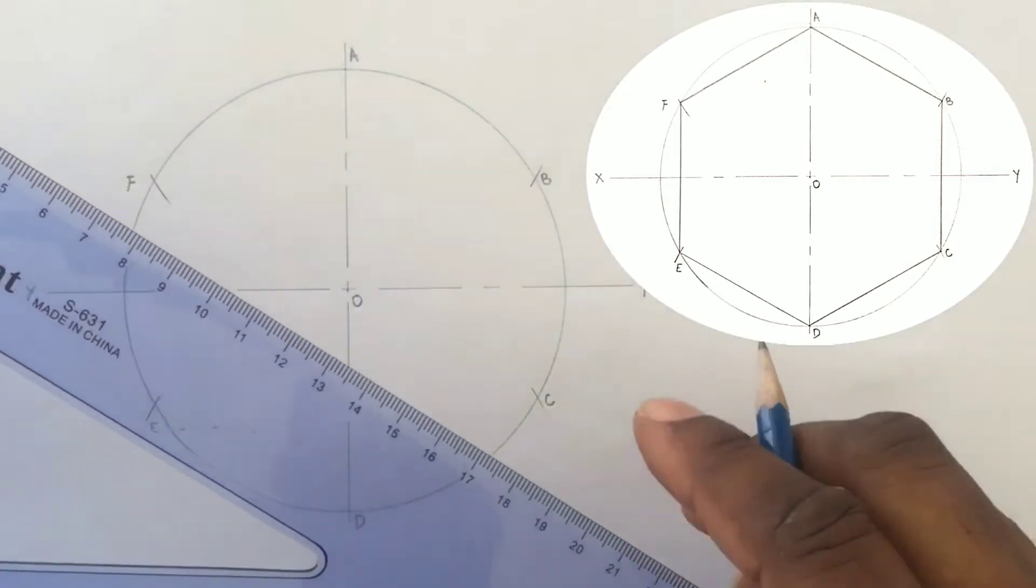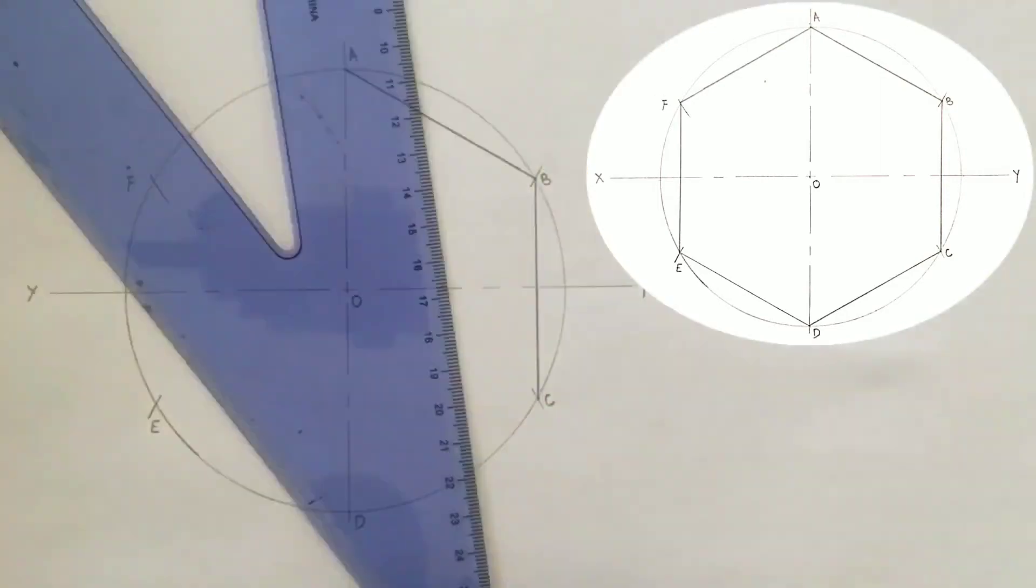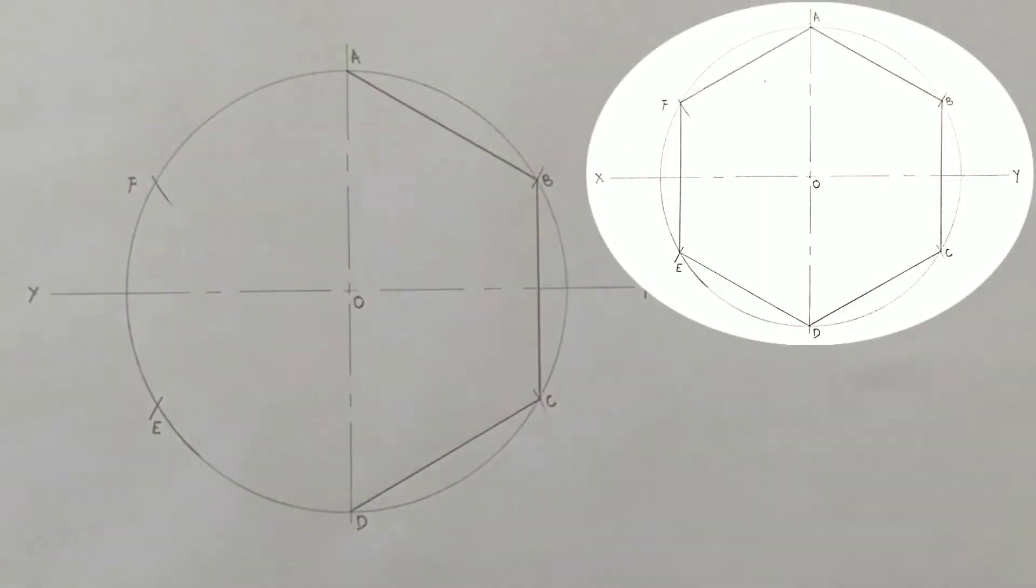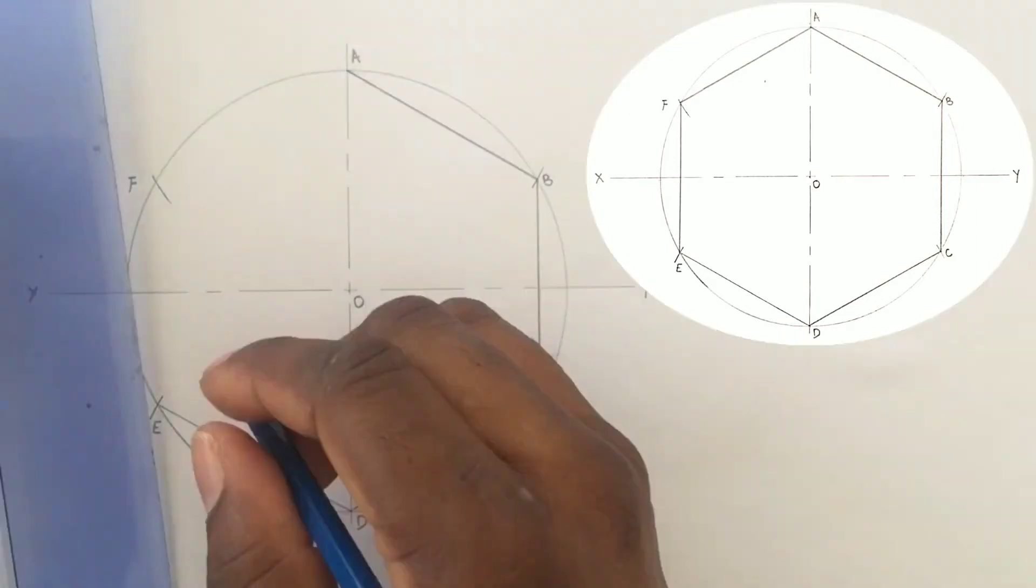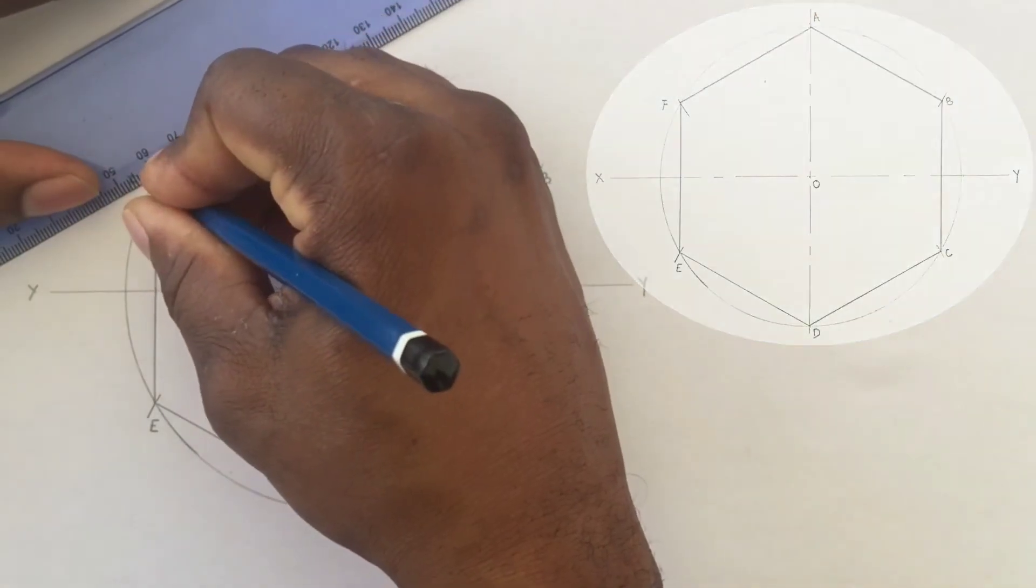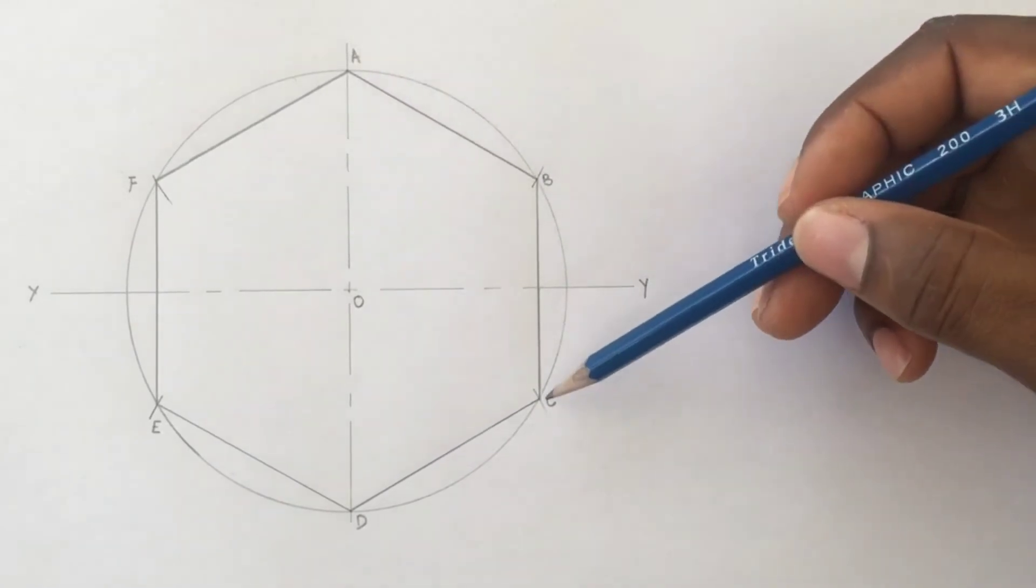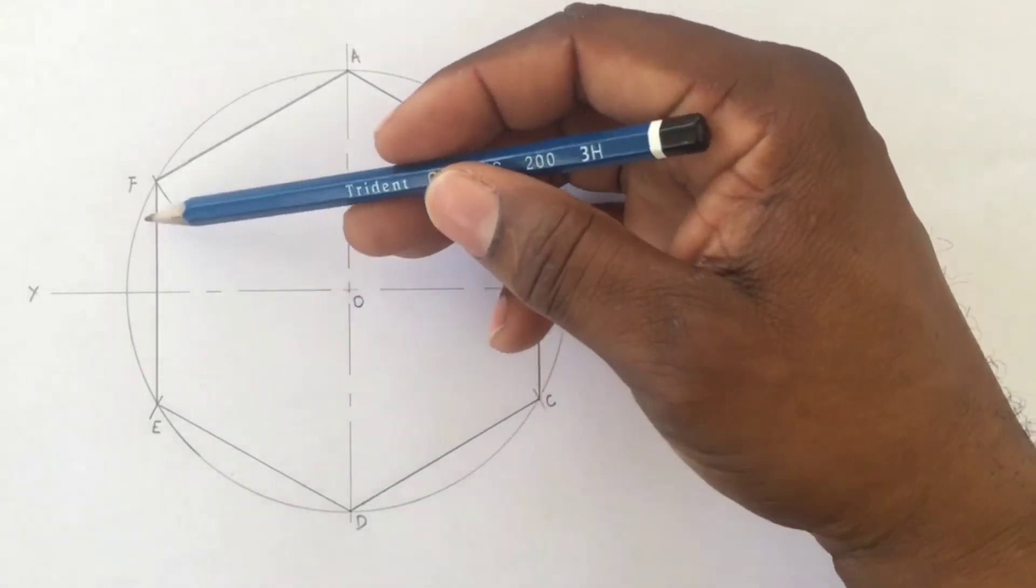We will now draw a line from A to B, B to C, C to D, D to E, E to F and A to F. Now our hexagon is ABCDEF.